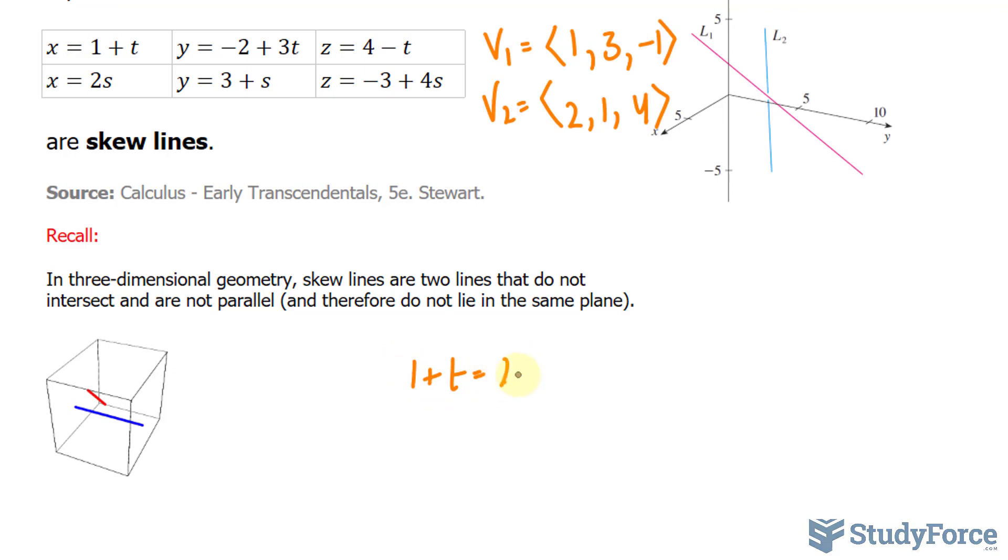1 plus t is equal to 2s. I'll solve for a variable. Let's solve for t. Bringing that one over, t is equal to 2s minus 1.